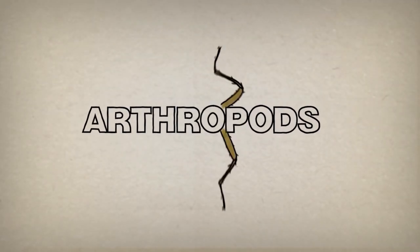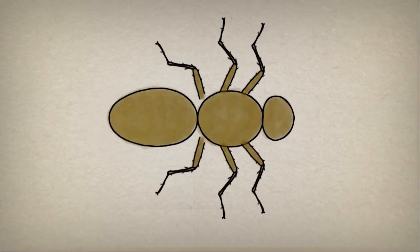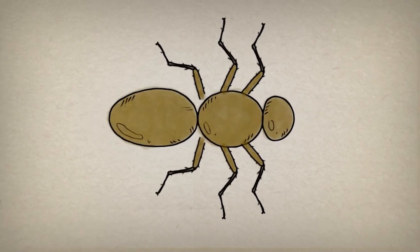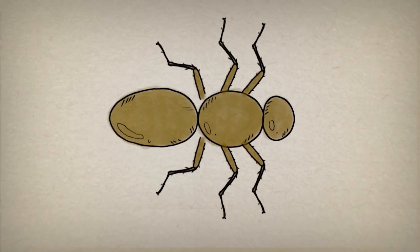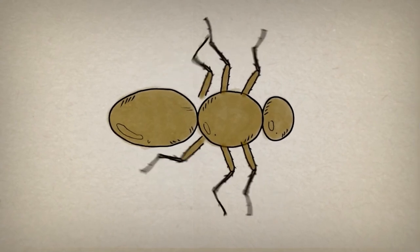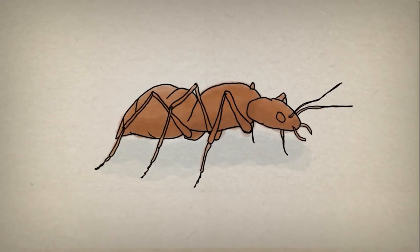Insects are arthropods, which means they have legs with joints, bodies in segments, and a hard outer covering called an exoskeleton, like having your skeleton on the outside, like a suit of armour.